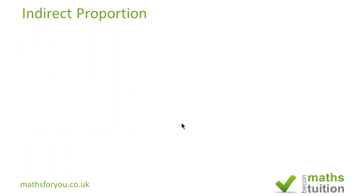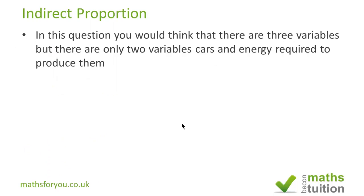On the face of it, you will think there are 3 variables in this question. But in actual fact, there are only 2 variables. You're looking at the number of cars and the energy spent in producing the cars. You've got cars, men, and hours — but in effect, you've got only 2 variables, not 3. So strictly speaking, it is not indirect proportion as such.